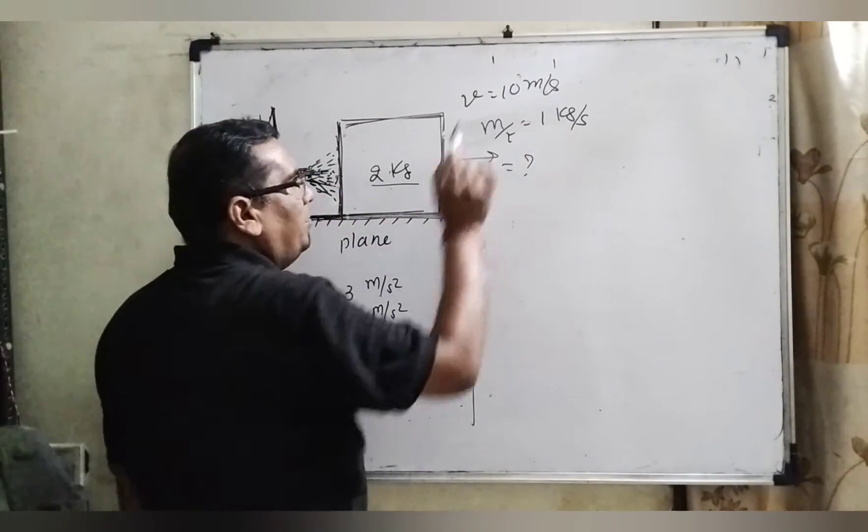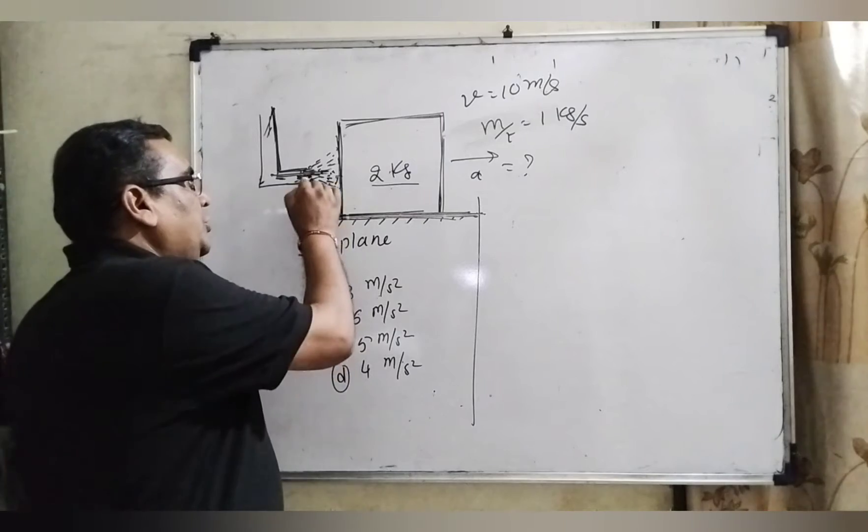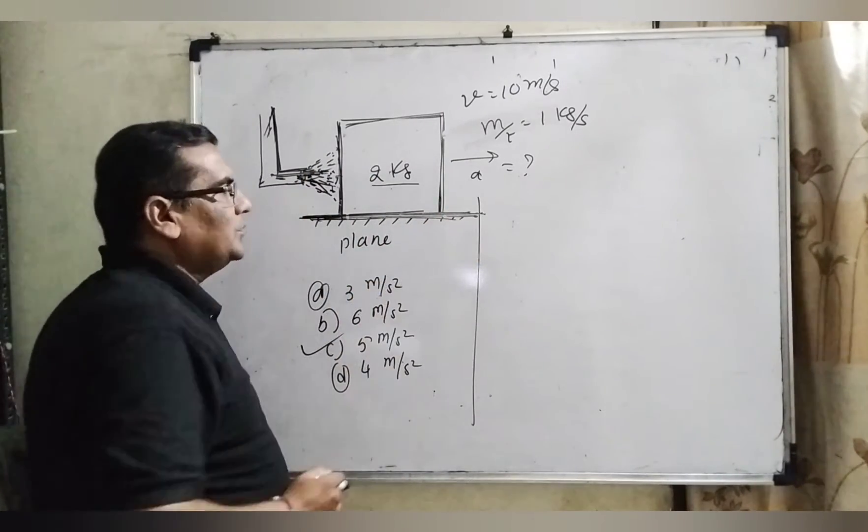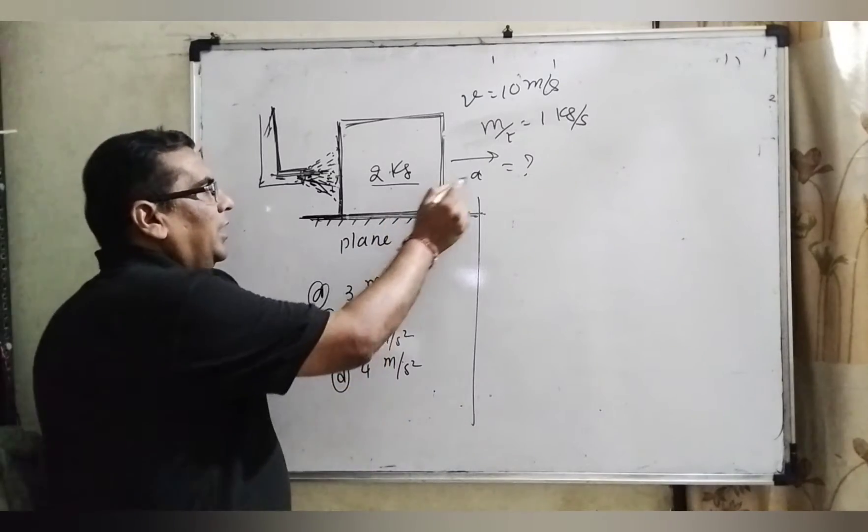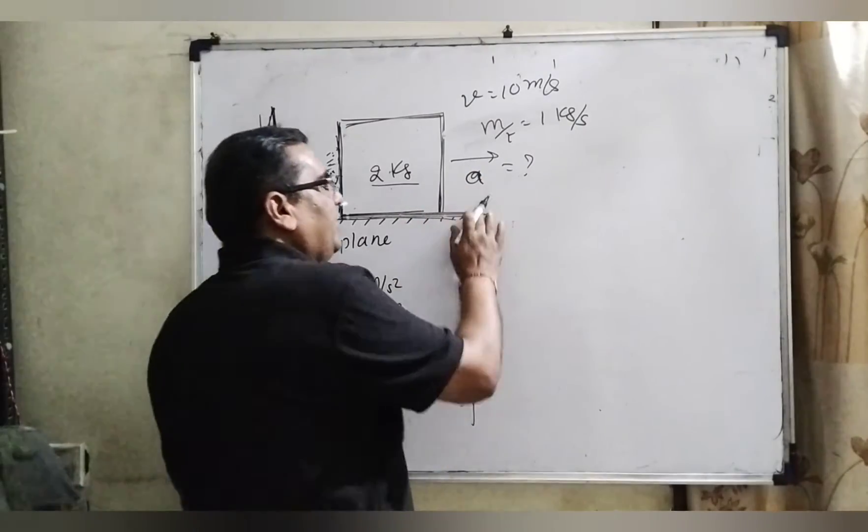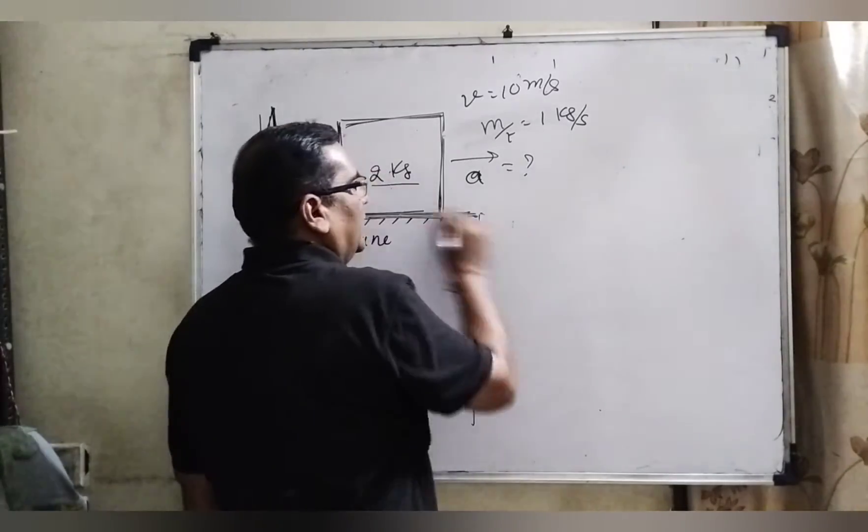at a rate of 1 kilogram per second. Due to this water jet, it is moving towards the right side. We have to find out the acceleration. We are using a simple formula: the rate of change of momentum.